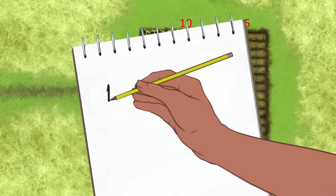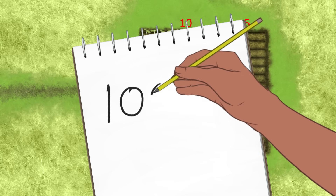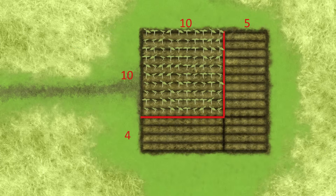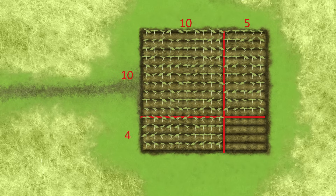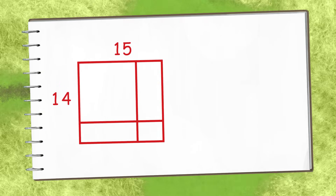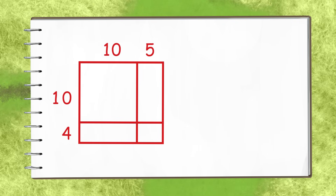He wrote 100 with his pad and pen. Then he multiplied 10 by 5 — there were 50 more plants coming alive. Then 10 times 4 equals 40, and just the bottom corner was empty, so he multiplied 5 by 4 and ended up with 20 more. Split up the place values in multiplication.